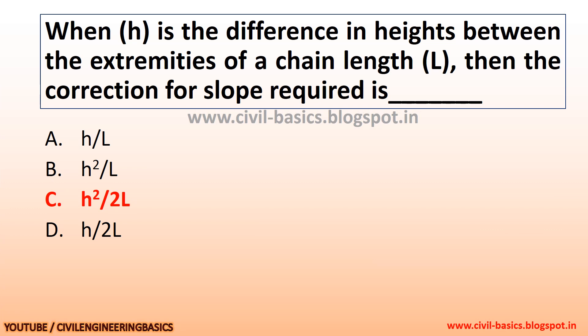When h is the difference in heights between the extremities and L is the chain length, then the correction for slope required is h² divided by 2 times the chain length.